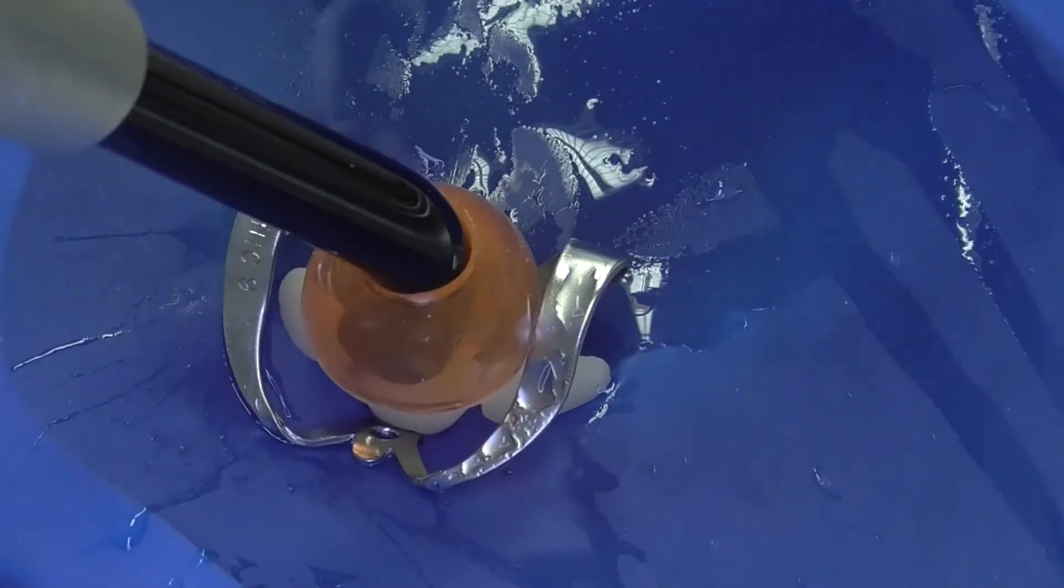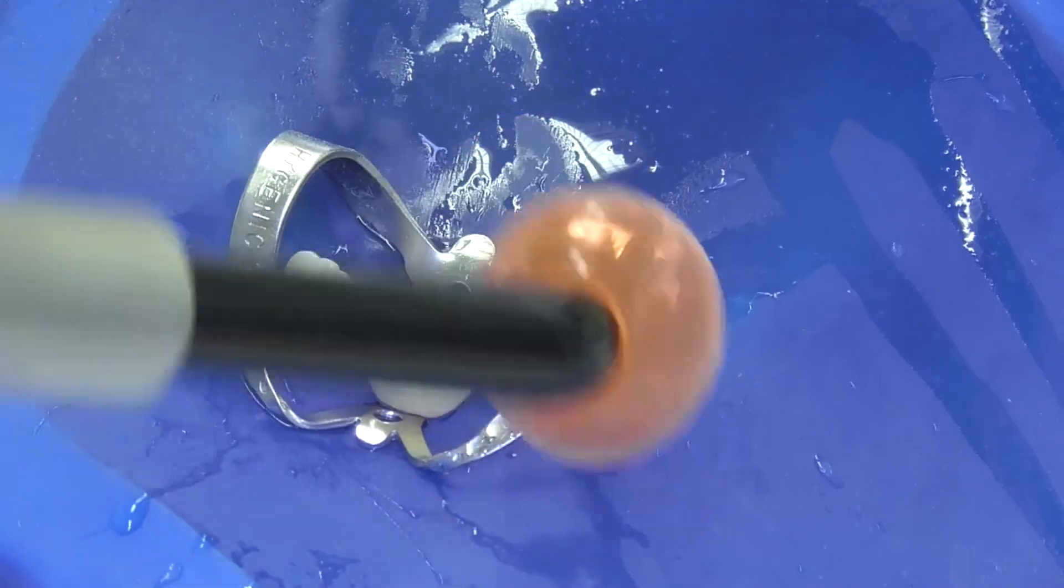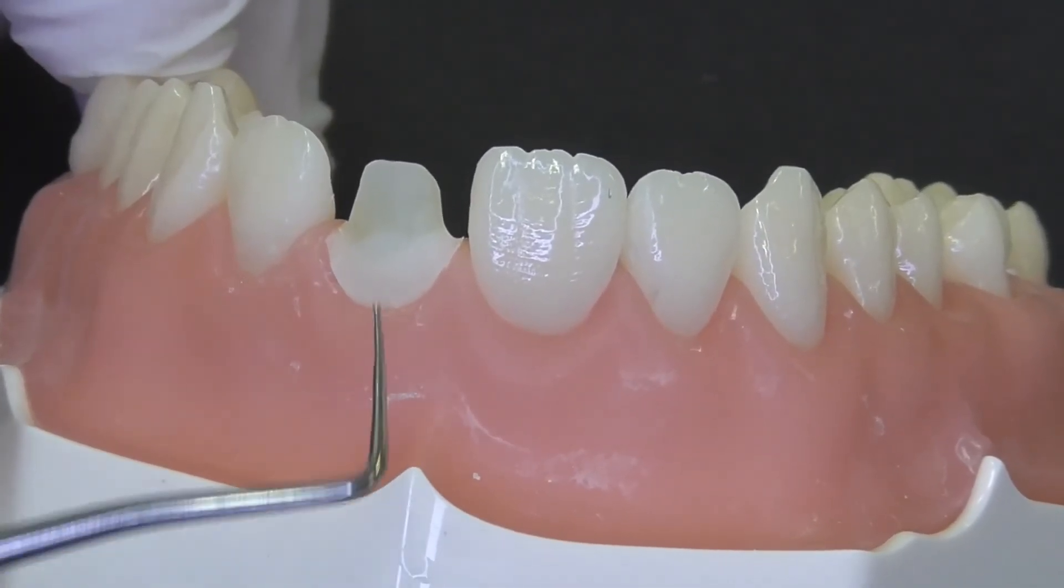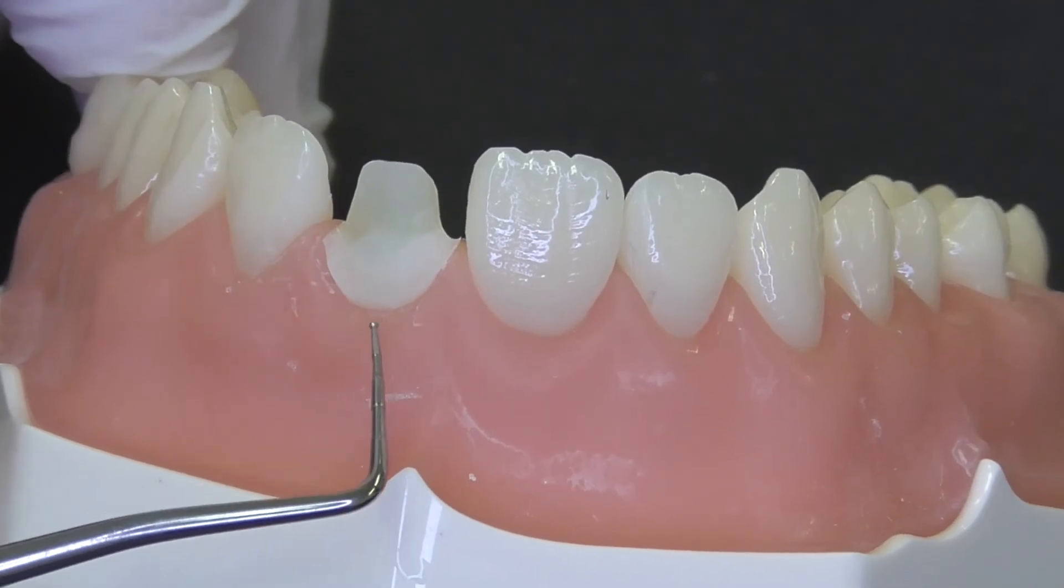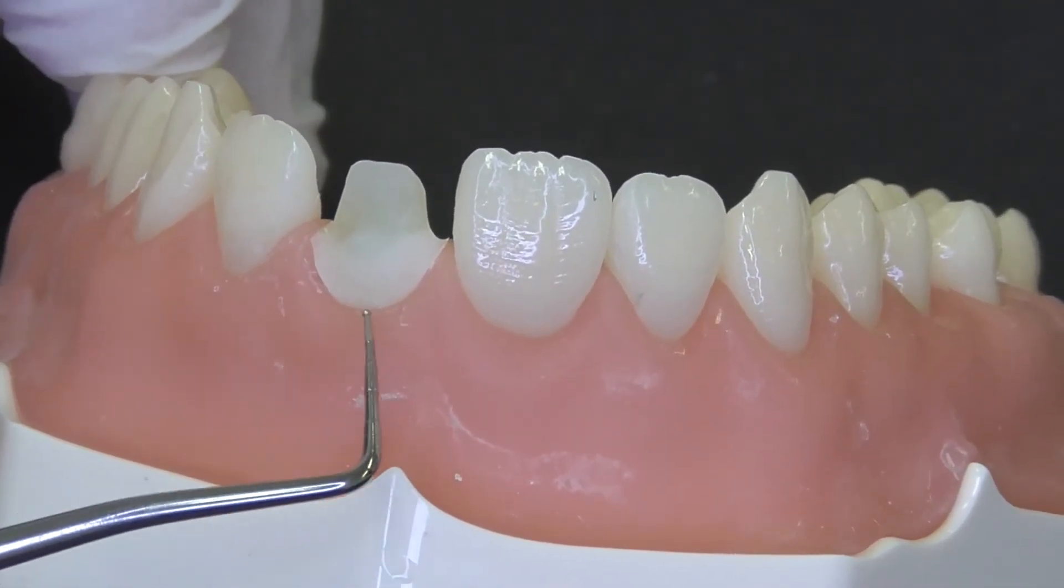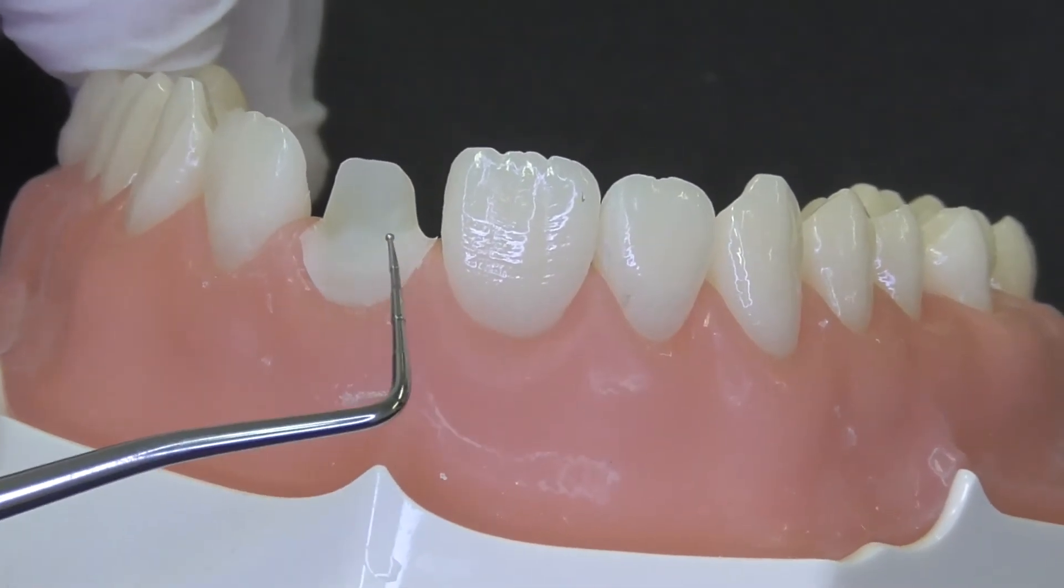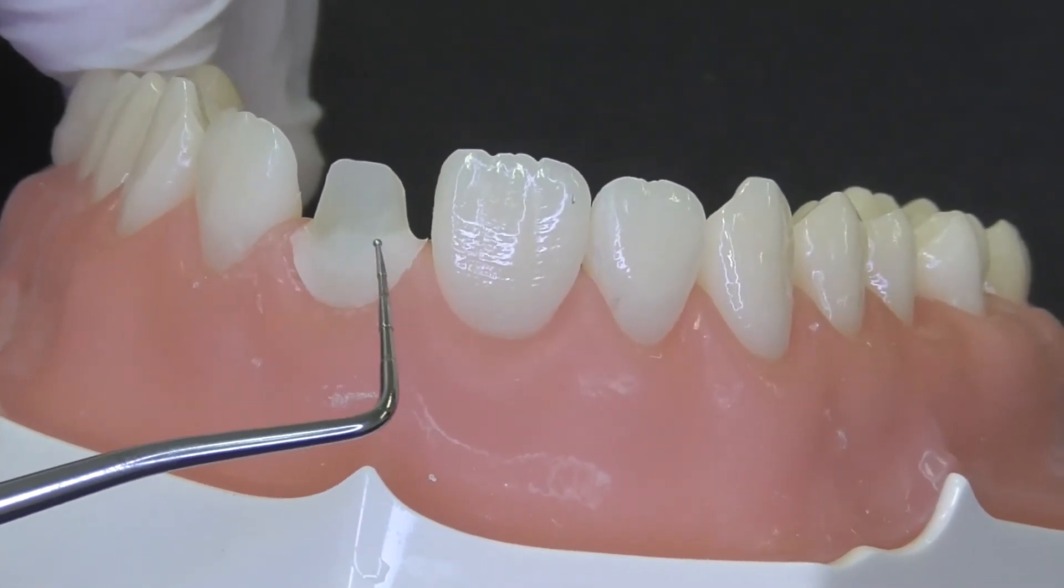After light curing and preparation of the core, we have a post-core system consisting of three pieces of longitudinal fibers embedded in the Gradia Core cementation material and the core material, which is made out of short fiber reinforced EverX Flow composite material.